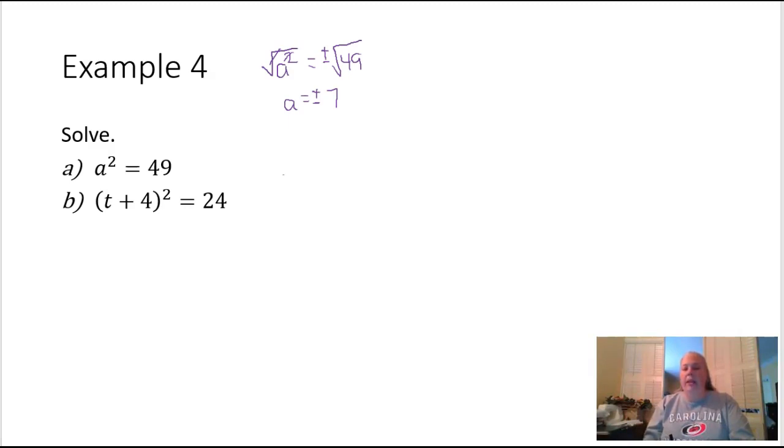Because we can go ahead and square root the left-hand side of that equation, it is a perfect square. And then we can square root the other side of the equation as well, even though 24 is not a perfect square. We can simplify that if there are any perfect squares inside there.